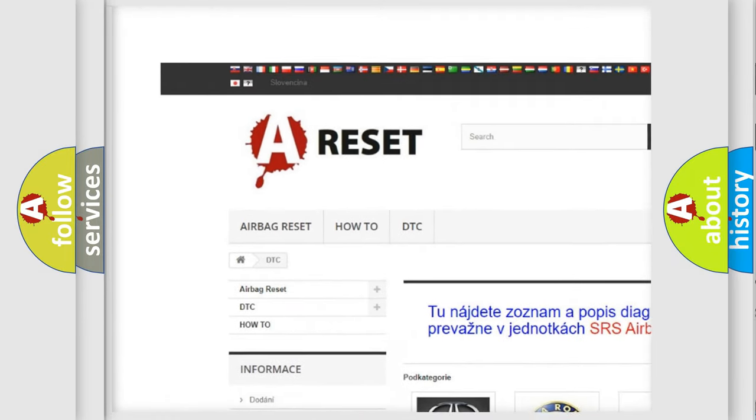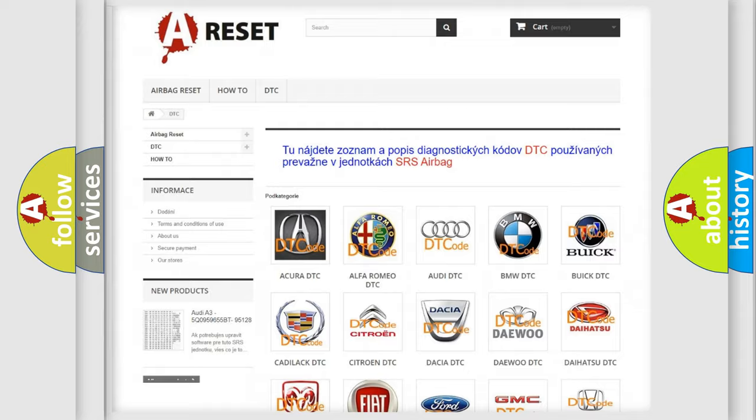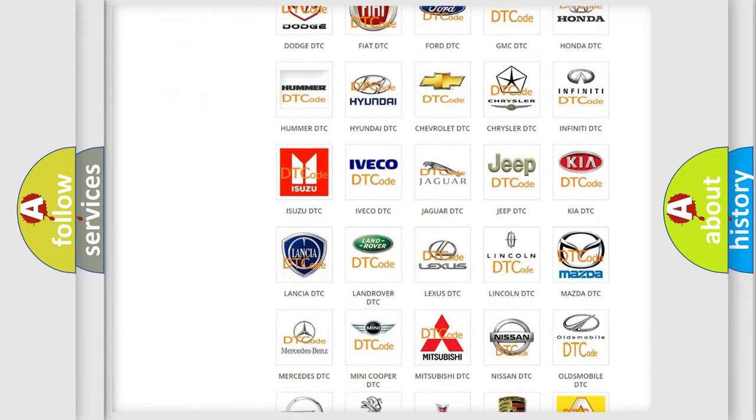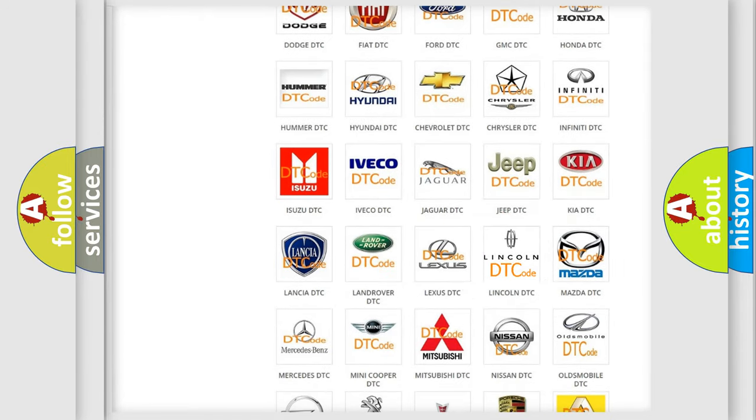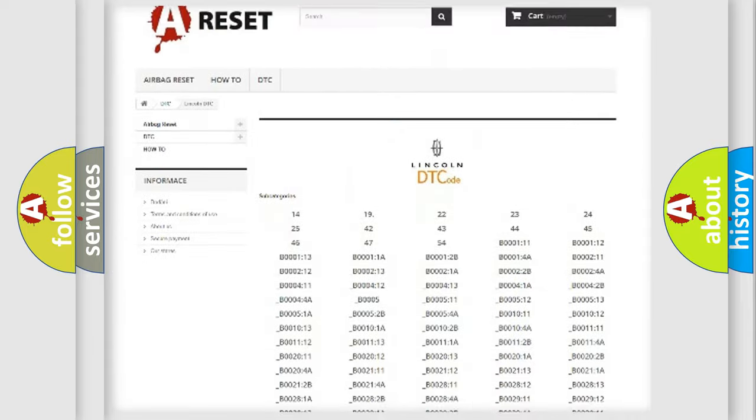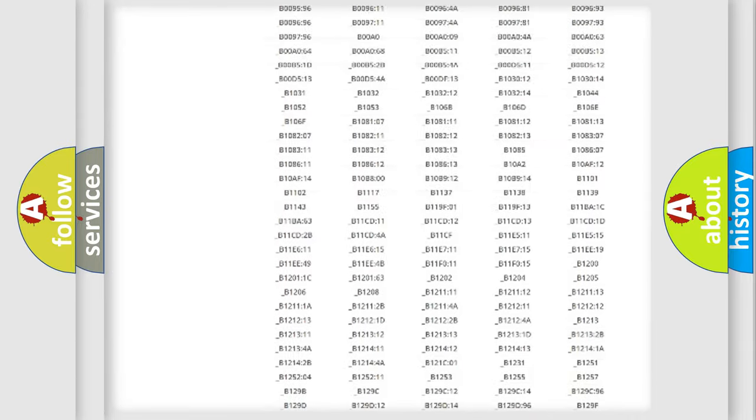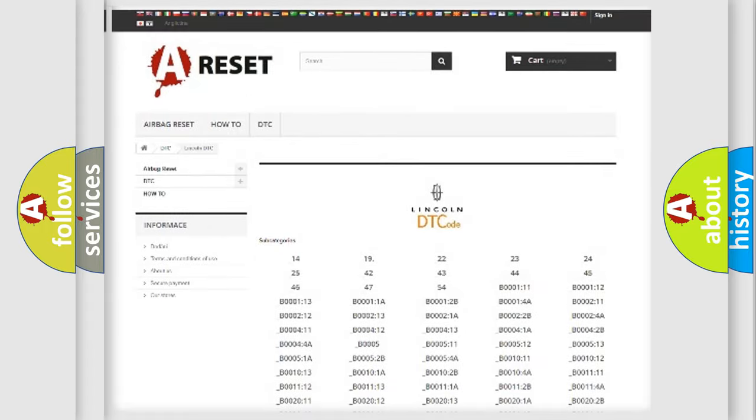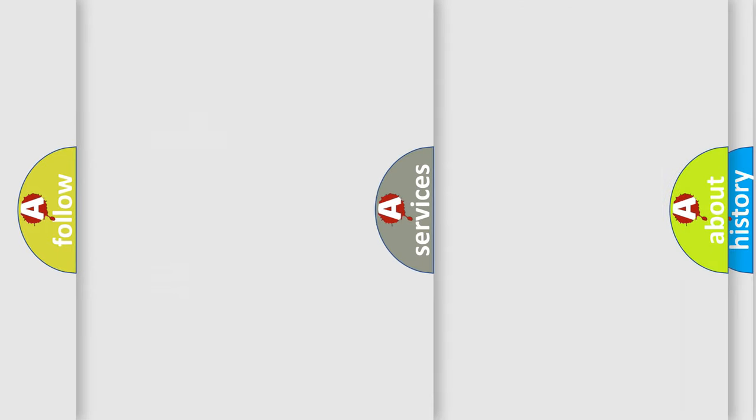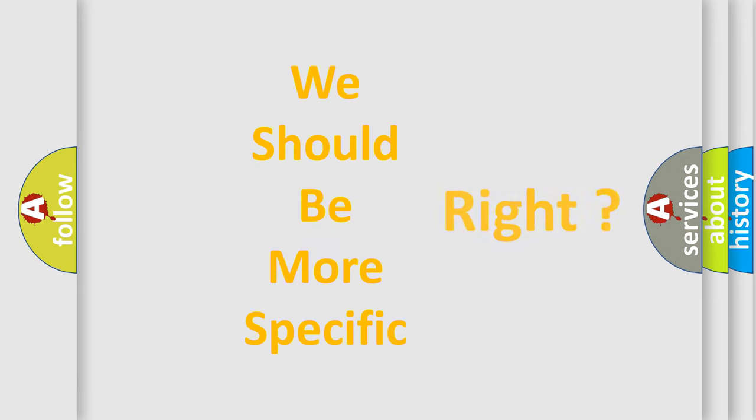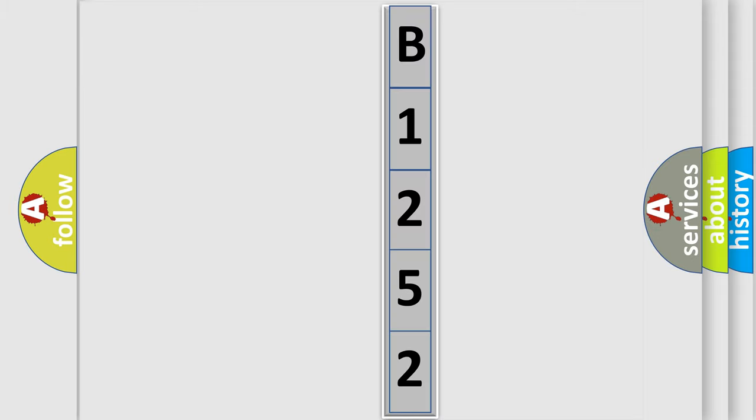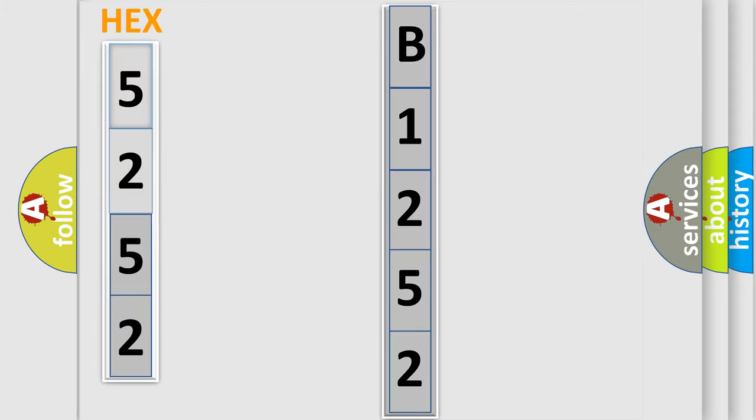Our website airbagreset.sk produces useful videos for you. You do not have to go through the OBD2 protocol anymore to know how to troubleshoot any car breakdown. You will find all the diagnostic codes that can be diagnosed in Lincoln vehicles, and also many other useful things. The following demonstration will help you look into the world of software for car control units.